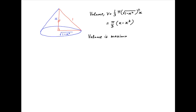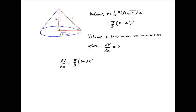The volume is maximum or minimum when the derivative of V with respect to x is equal to 0. dV/dx is equal to π/3 times (1 minus 3x²). Setting this equal to 0, we get x is equal to 1 upon root 3.